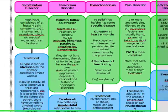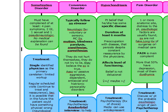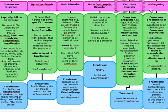Body dysmorphic disorder — the easiest way to remember this is Michael Jackson. These patients believe some part of their body is abnormal or defective, so they visit plastic surgeons often. This is an easy test question to recognize, and the treatment is individual psychotherapy along with SSRIs.